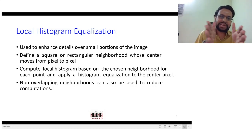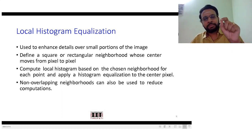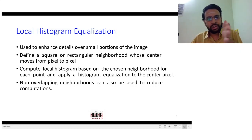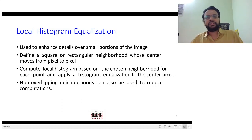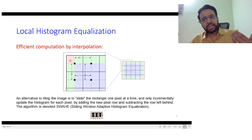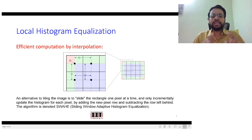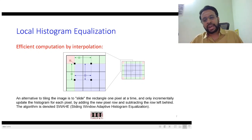You assign that mapped intensity to the pixel at the center of your window. Then you slide your window and repeat the whole process — finding the corresponding mapped intensity for the center pixel of the new window and replacing it with that intensity. By the way, local histogram equalization is also commonly referred to as adaptive histogram equalization, because it adapts based on where that particular pixel is and what the surrounding pixel intensities are.